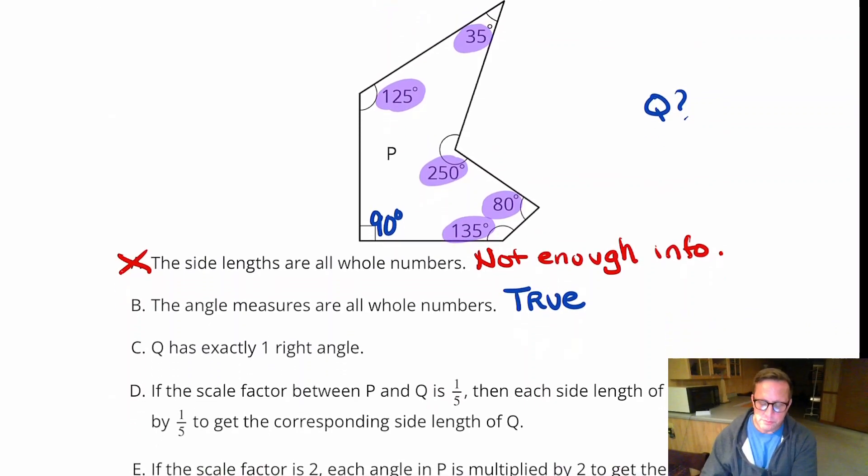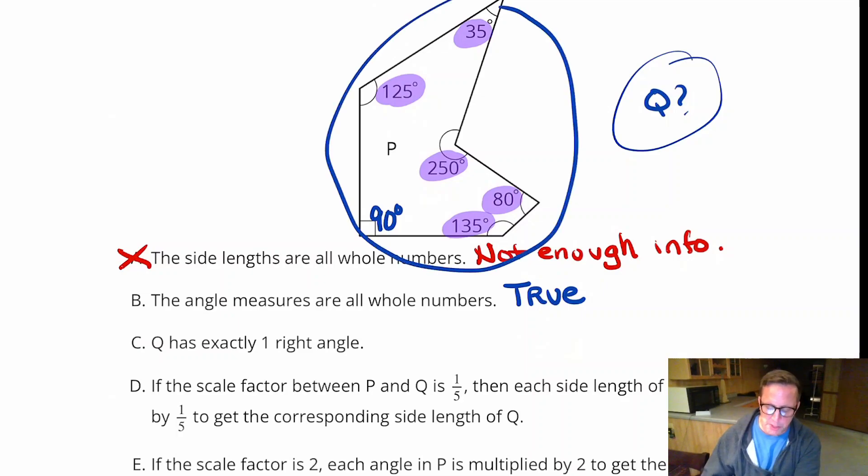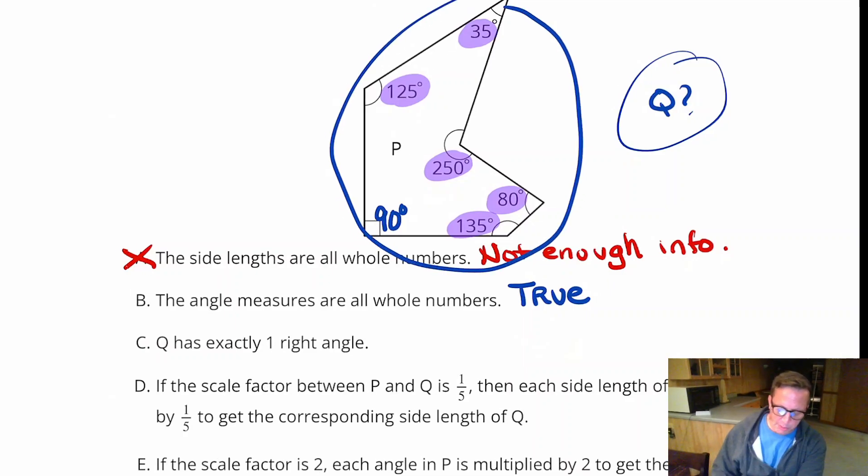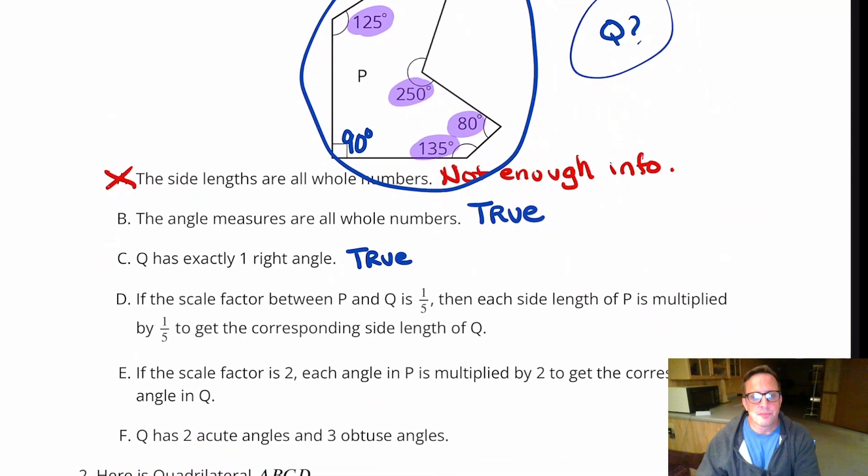Q, you know, that mystery shape that we don't even see, but you have to imagine. But Q has exactly one right angle. Well, this shape has one right angle, so we can say that Q has one right angle, because the scale copy of it is going to have the exact same corresponding angles.